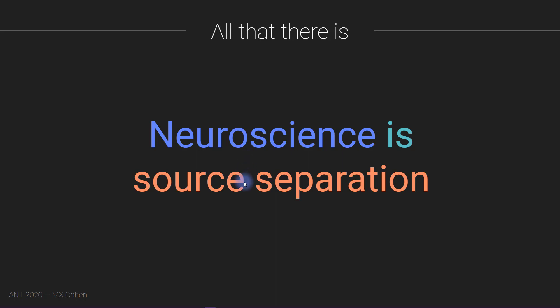In the previous video, the idea was that we're looking at time series data from one electrode, one neuron, or a population of neurons. We say that sources can be mixed — different signals and noise all get mixed together into the same electrode data. To the extent that the different sources have representations in different frequency bands, we can use spectral or time-frequency analyses to try to separate those different sources happening simultaneously.